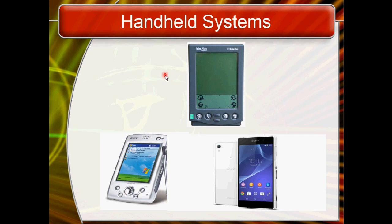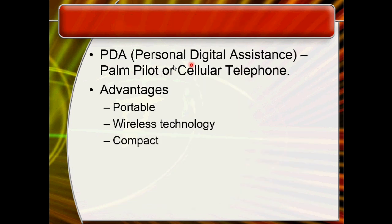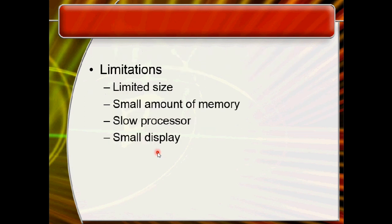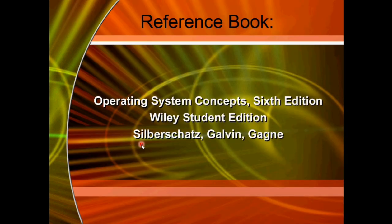The last kind of system is the hand-held system — devices we hold in our hands. Examples include PDAs (personal digital assistants), Palm Pilots, cellular telephones, and mobile telephones. Advantages include portability, wireless technology, and compact size. Limitations include limited size, small amount of memory compared to a computer, low processor speed, and a small display.